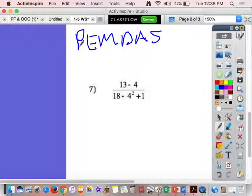Do we have any parentheses? No. Do we have any exponents? No. Do we have any multiplication? No. Multiplication or division? No. Do we have any addition or subtraction? Yes. 13 minus 4. So, we have 9. And then, I'm going to rewrite this whole thing. 18 minus 4 squared plus 1.